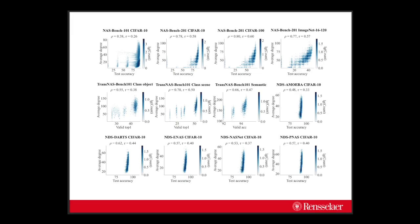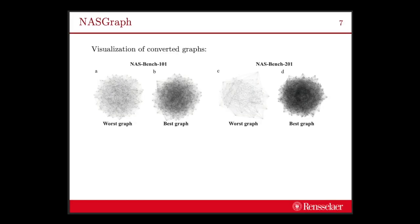That's the performance comparison in terms of ranking correlation. Here is the visualization for the converted graphs. From this visualization, we can find a good neural architecture tends to correspond to a dense graph, and a bad neural architecture tends to correspond to a sparse graph. That is consistent with the figure I shown in the previous slide. There is a positive correlation between the graph average degree and the model performance.